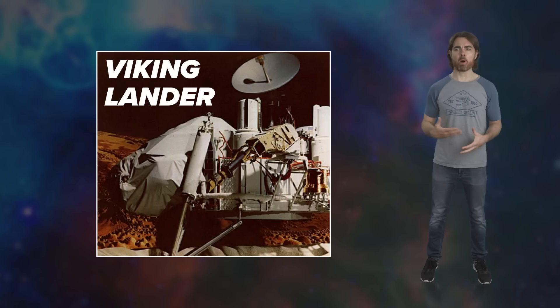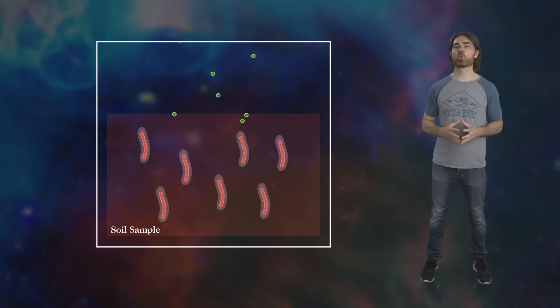A closer look was needed. NASA landed Viking 1 and 2 on the surface of Mars in 1976. They conducted four experiments looking for the biosignatures of past or present microbial life. Three of the tests were negative, but the fourth was positive.